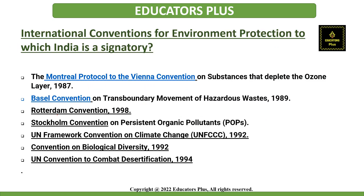Some international conventions for environment protection to which India is a signatory: the Montreal Protocol to the Vienna Convention on Substances that Deplete the Ozone Layer (1987); the Basel Convention on Transboundary Movement of Hazardous Waste (1989); the Rotterdam Convention (1998); the Stockholm Convention on Persistent Organic Pollutants; the United Nations Framework Convention on Climate Change (1999); the Convention on Biological Diversity (1992); and the United Nations Conference to Combat Desertification (1994).